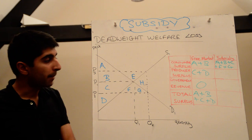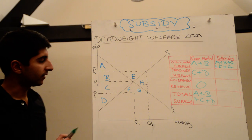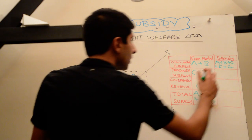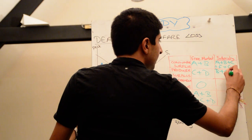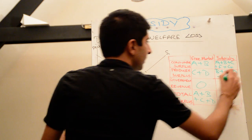Well, it's the area above the supply curve and beneath the price. And that gives us an area which is B plus C plus D plus E.